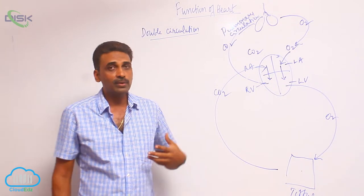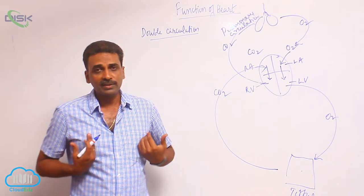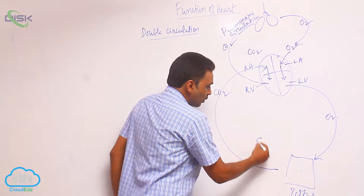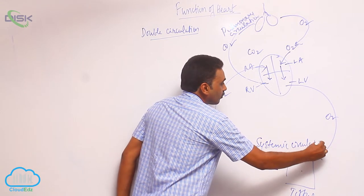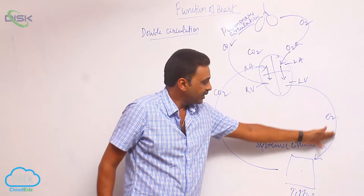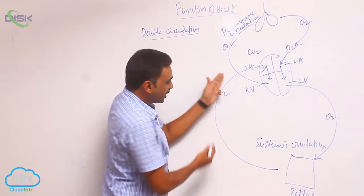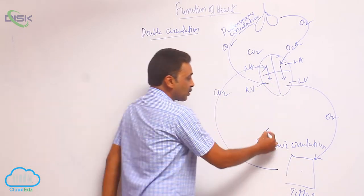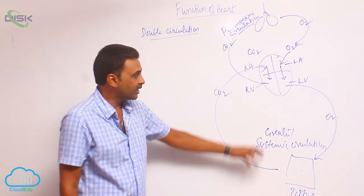We call it lesser because the blood is coming very close — from the heart it is coming to the lungs, and the lungs are present very close to the heart. This other circuit is called systemic circulation. Oxygenated blood is coming from the heart to tissues, and deoxygenated blood is going from tissues to heart. This is called systemic circulation, also called greater circulation.